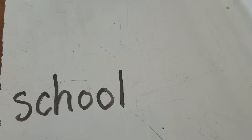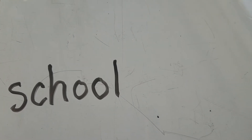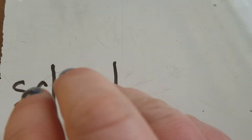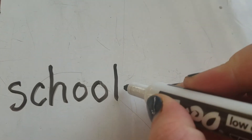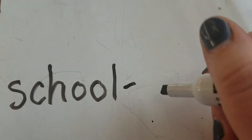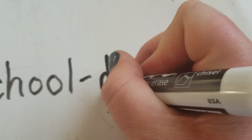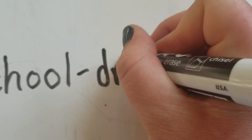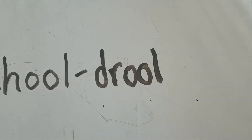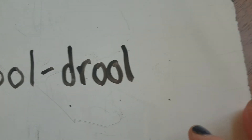How would we turn school into drool? Like the baby has some drool. Duh, ruh, ooh, luh — drool. So we drop those first three sounds and do duh, ruh, ooh, luh — drool.